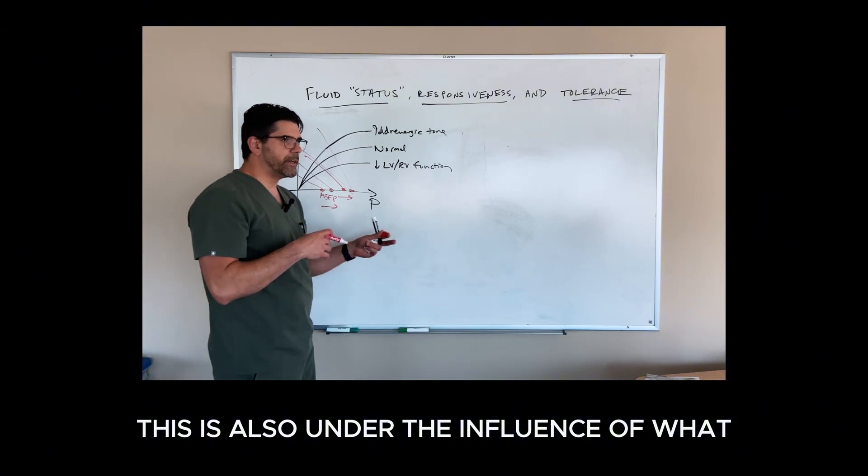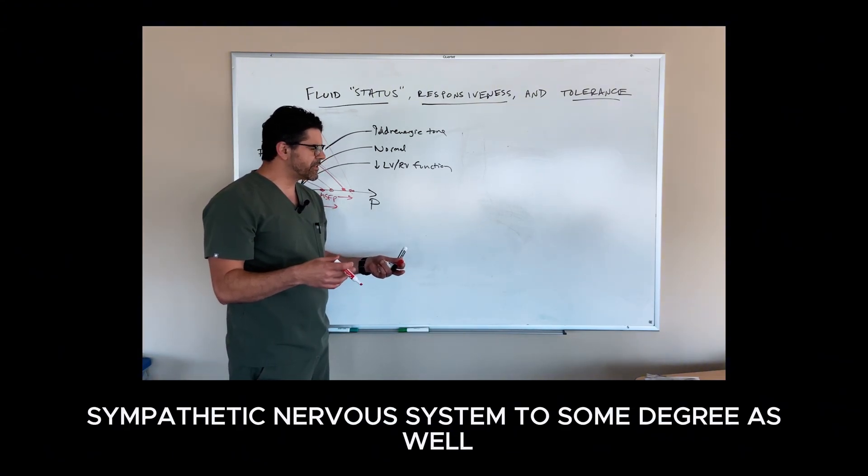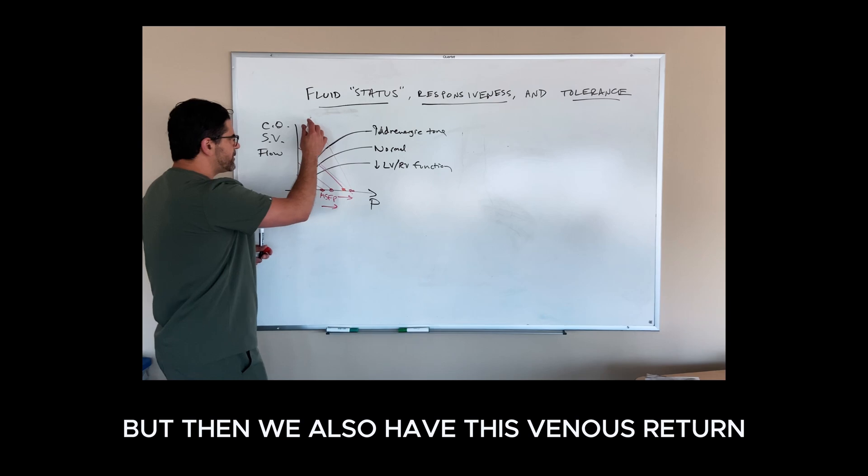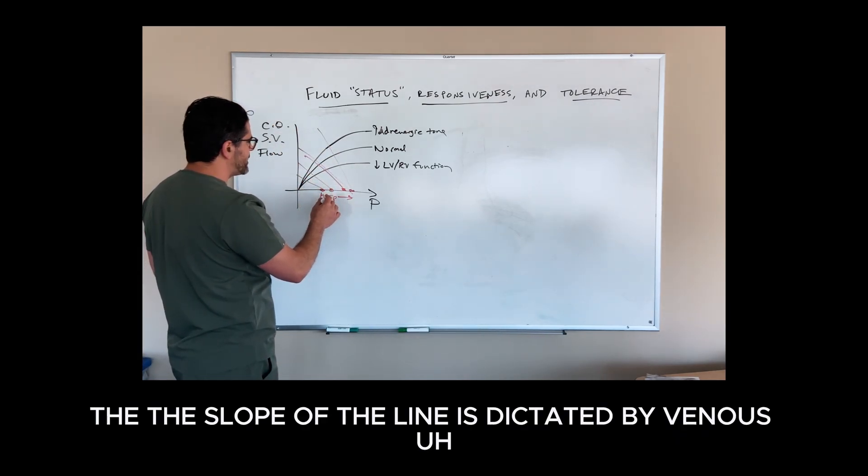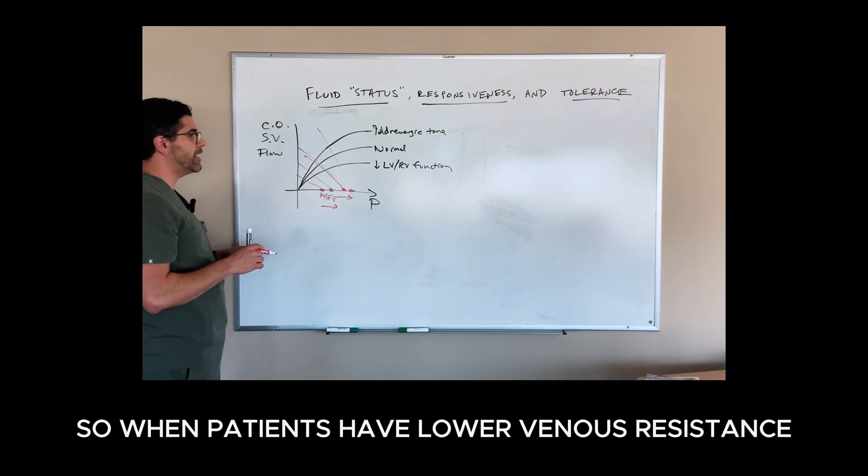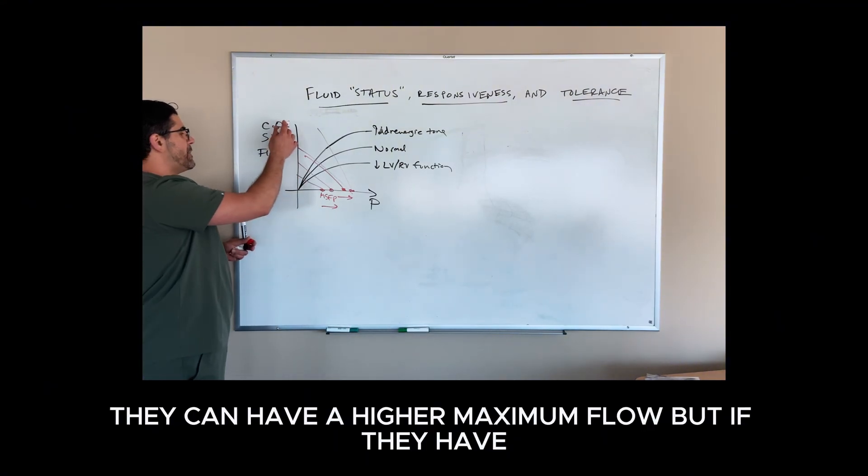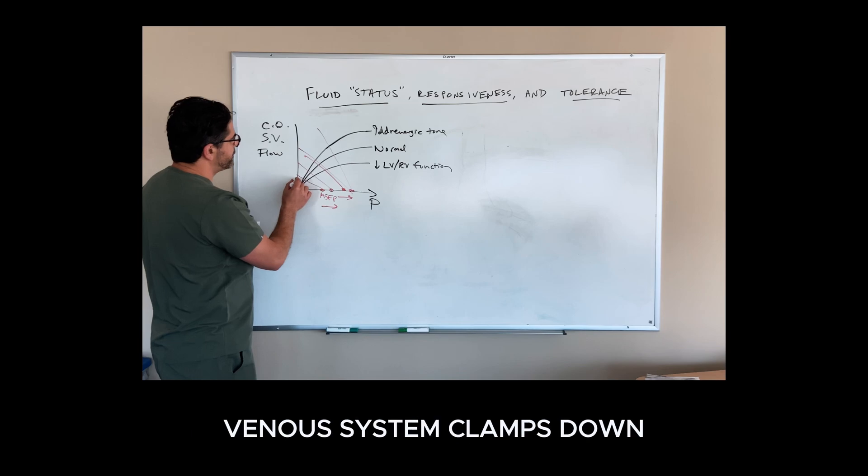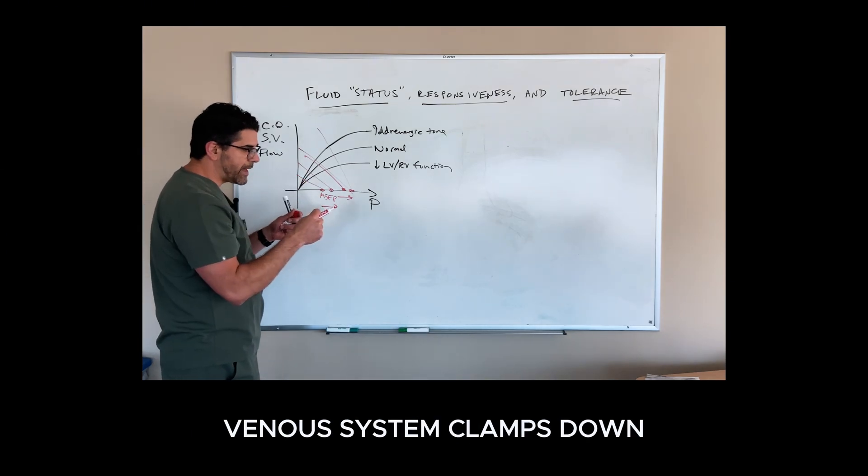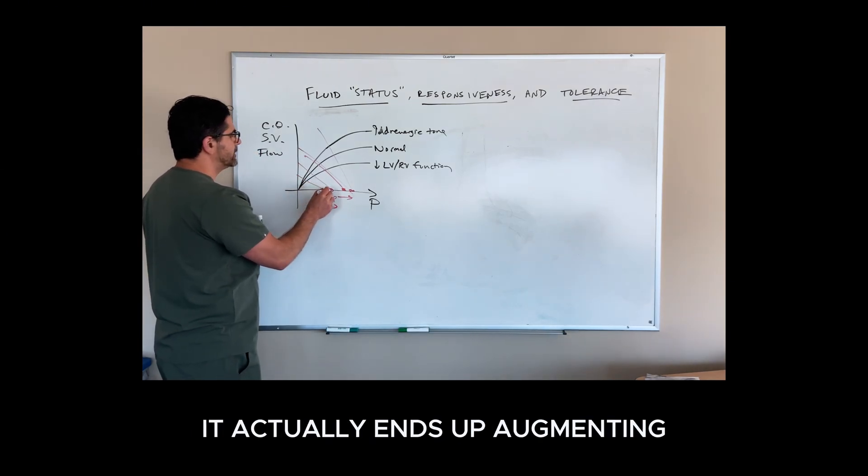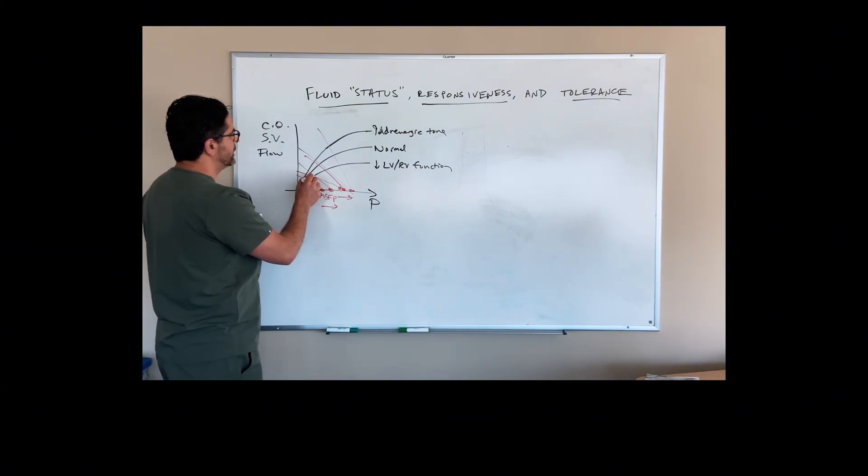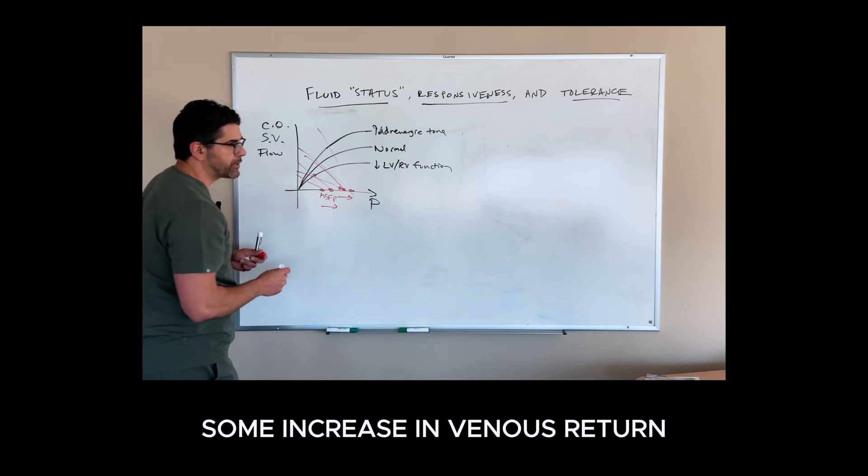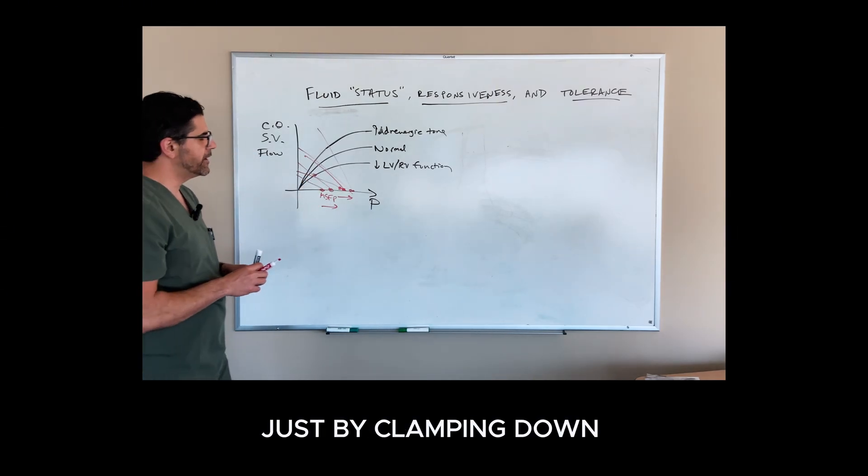This is also influenced by the sympathetic nervous system to some degree. The slope of the venous return line is dictated by venous resistance. When patients have lower venous resistance, they can have a higher maximal flow, but if the venous system clamps down, it actually ends up augmenting cardiac output at the same pressure. They get some increase in venous return just by clamping down their veins.